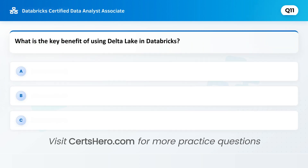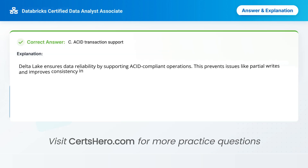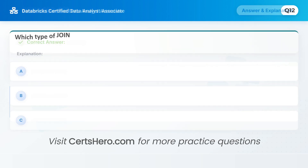What is the key benefit of using Delta Lake in Databricks? A. Faster UI rendering. B. Notebook integration. C. ACID transaction support. Correct answer is C: ACID transaction support. Delta Lake ensures data reliability by supporting ACID-compliant operations. This prevents issues like partial writes and improves consistency in big data pipelines.